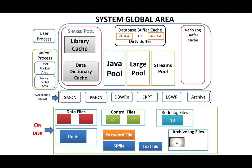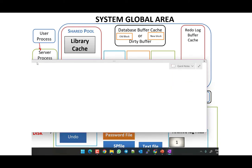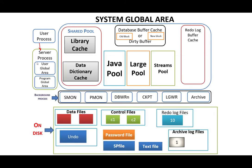First of all, suppose a user process fires a simple query: SELECT * FROM scott.emp. There is a table of the Scott user, and the user fires that query. Once the user process fires a query, it goes to the server process, which handles this query.